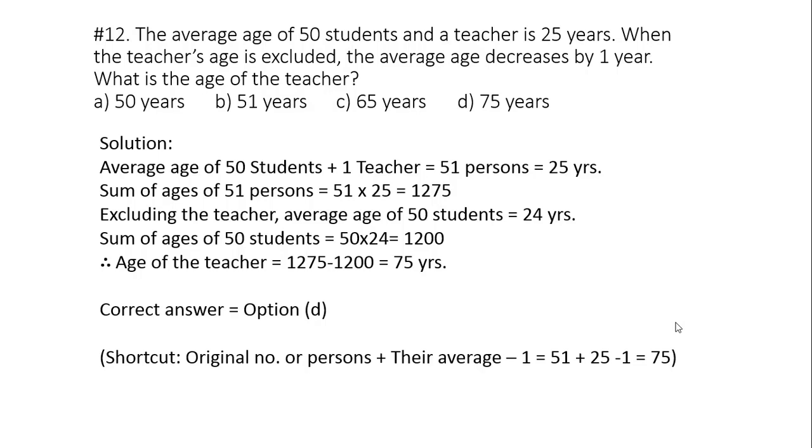Method one: Average age of 50 students plus one teacher, that's 51 persons, is given as 25 years. So sum of their ages will be 51 into 25 equals to 1275. Excluding the teacher, average age of 50 students is given as 24 years. So sum of ages of 50 students will be 50 into 24 equals to 1200. Difference of the two results will give us the age of the teacher: 1275 minus 1200, that is 75 years. The correct answer is option D.